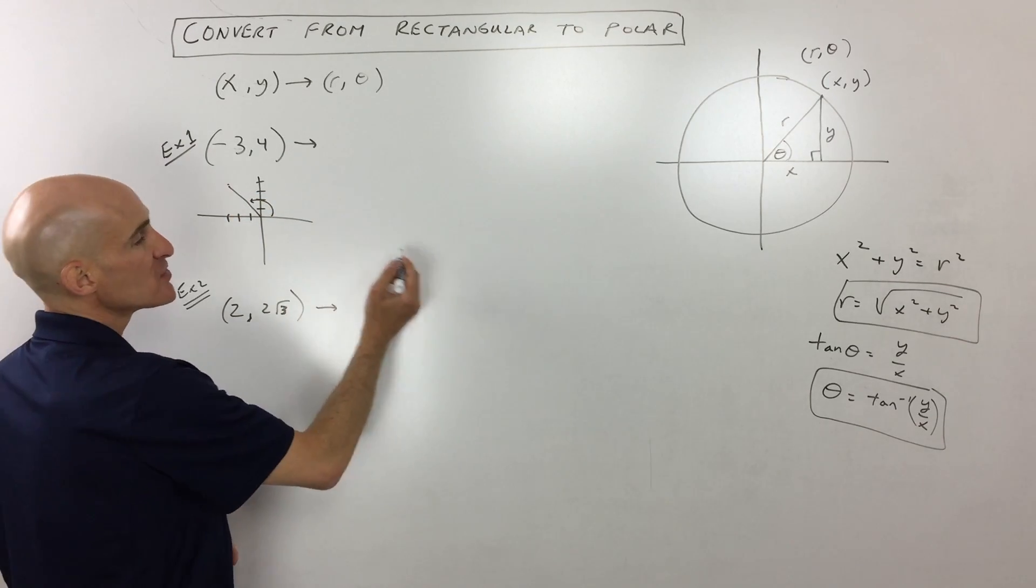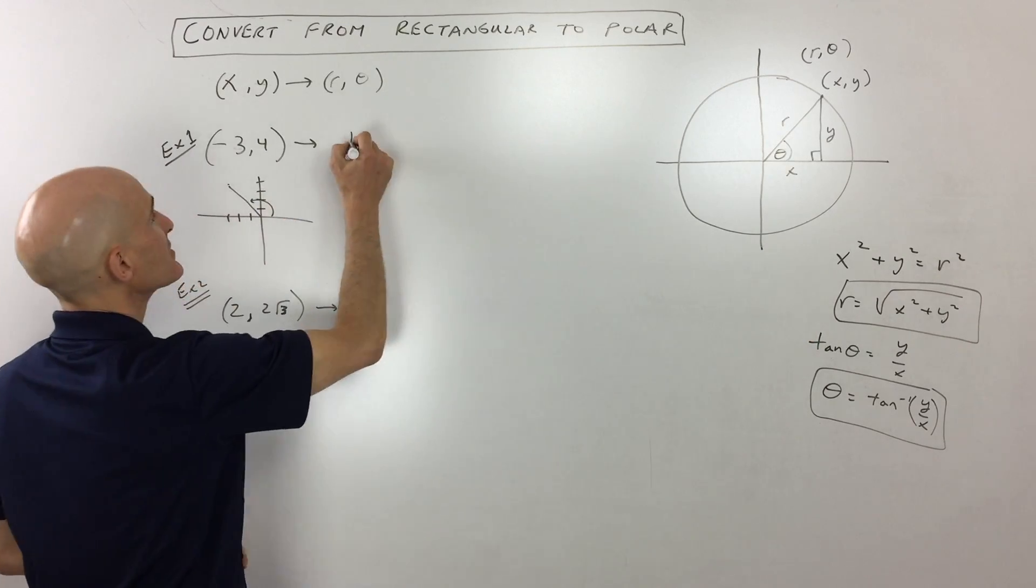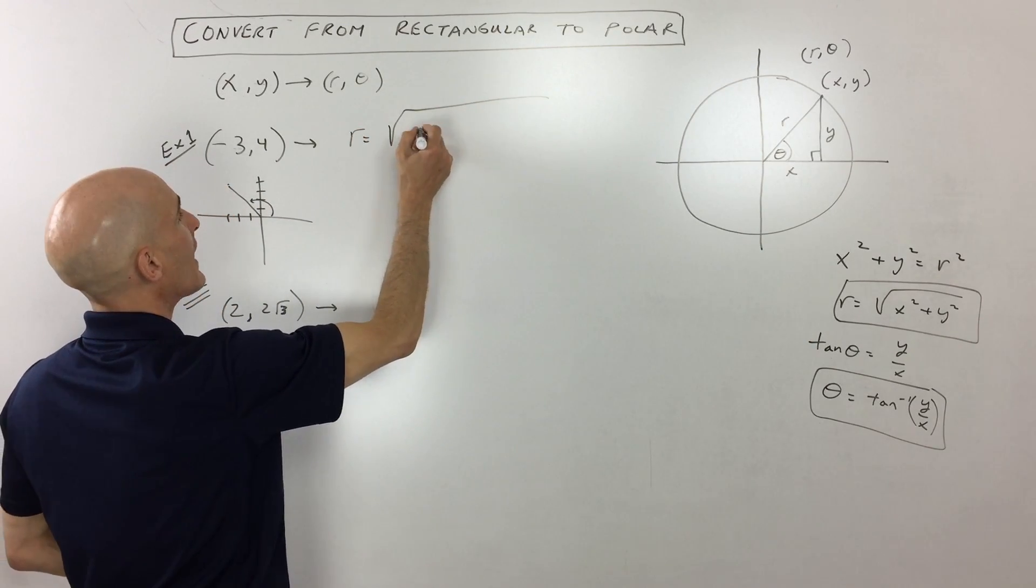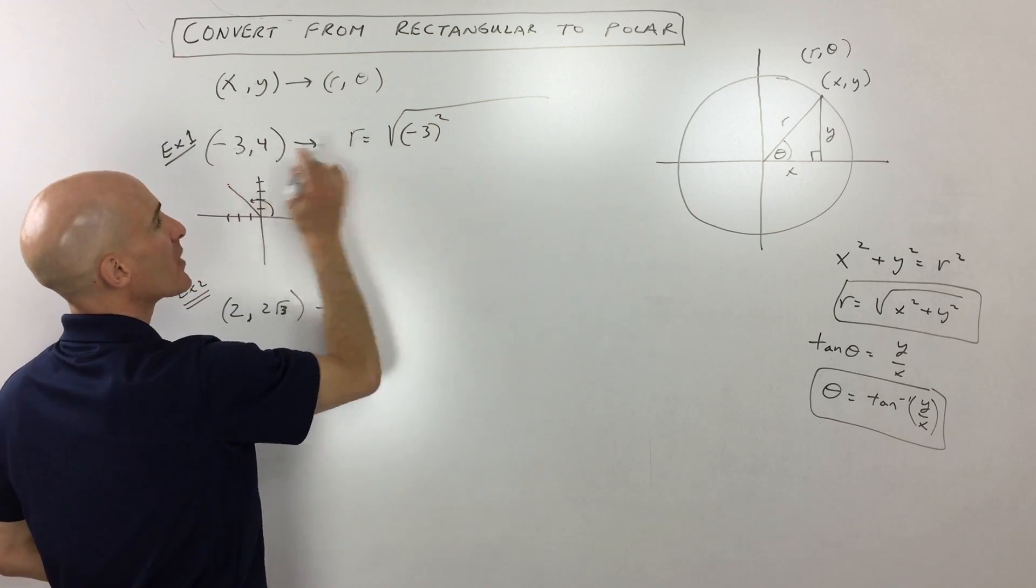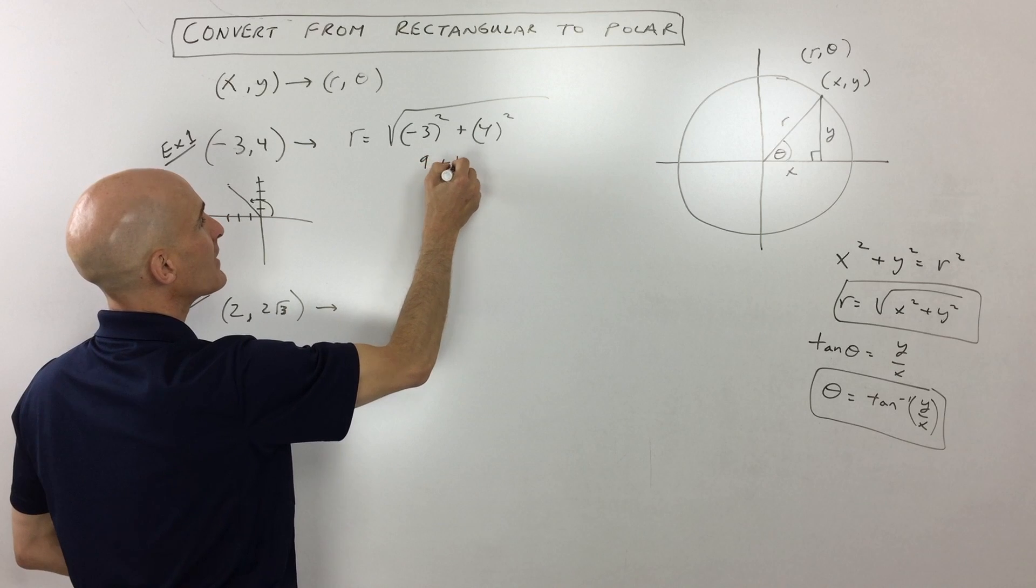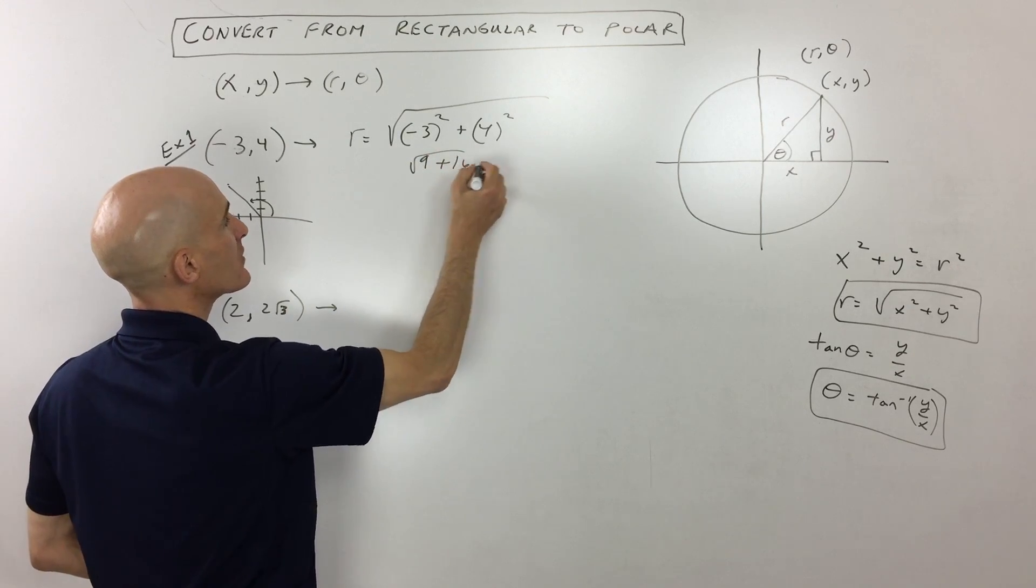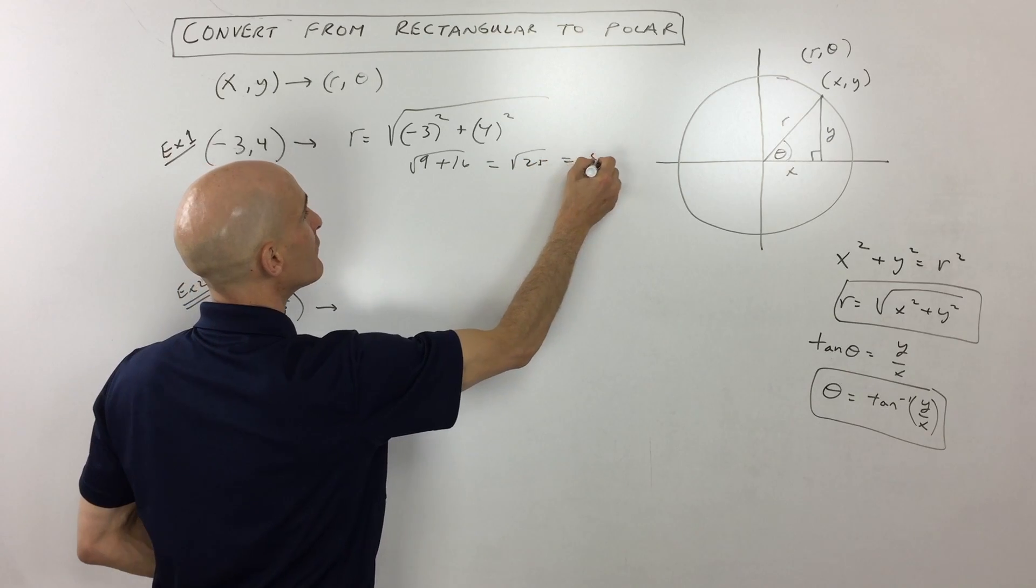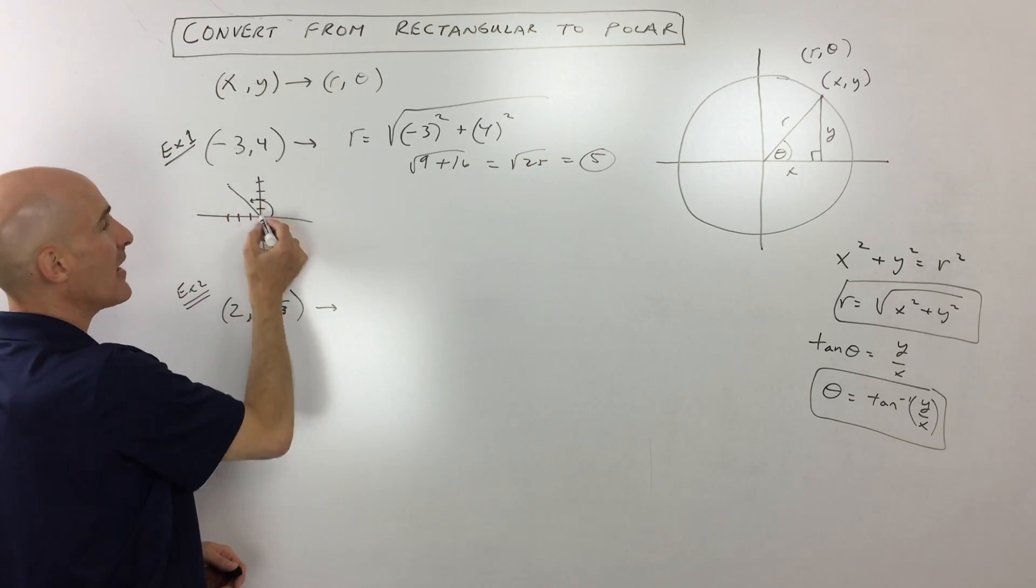We're going to use this first formula over here. The radius is equal to the square root of x squared. So negative 3 squared plus y squared. That's 4 squared. This comes out to 9 plus 16, square root of 25 is equal to 5. So we know our radius is 5.